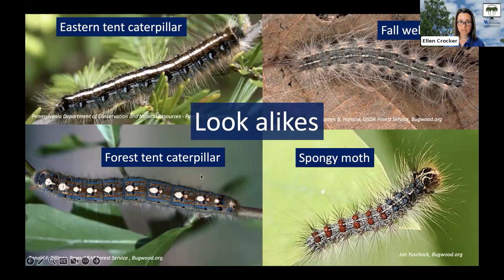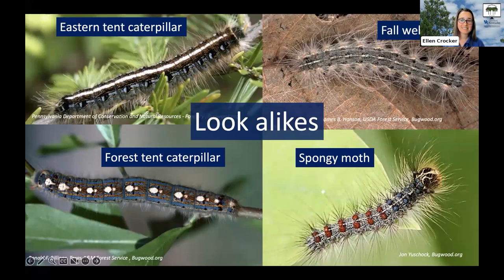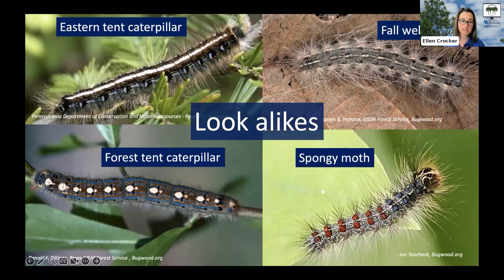Eastern tent caterpillar has one line down the back, yellow or white in color. Forest tent caterpillar is another native caterpillar but has more of these keyhole-shaped dots on the back. Fall webworm is another caterpillar that is really hairy and doesn't have quite the same coloration. And then there's the spongy moth. While eastern tent caterpillar, forest tent caterpillar, and fall webworm are native insects, spongy moth is an invasive insect we don't want to see. In other parts of the country, spongy moth is established and can cause major defoliation events — you can see it has different colored dots on the back, blue and red.